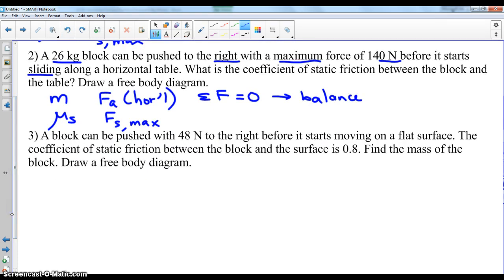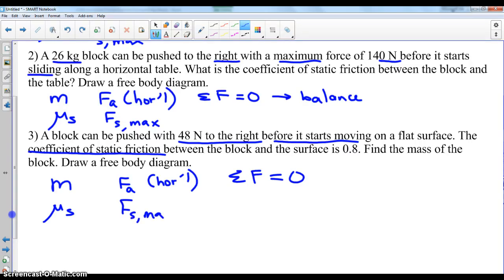The third problem, a block can be pushed with 48 newtons to the right. That is a horizontal force before it starts moving on a flat surface. The coefficient of static friction, mu_s, is given. Find the mass of the block. And this is before it starts moving, so it still is at rest. You're pushing on the block, but it's not going anywhere because of the maximum static friction. We put max, because static friction is as big as it can get. You are pushing as hard as you can before it moves, so static friction has reached its maximum.